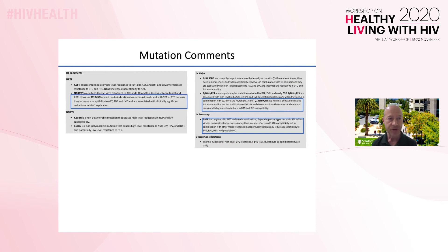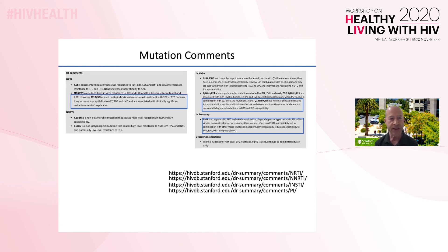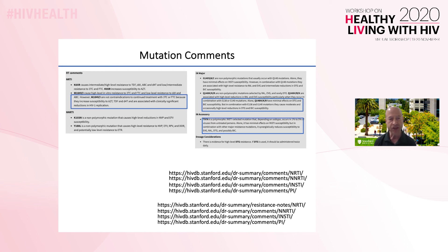The third part of the report for each drug class is the list of comments for each mutation. This slide shows the RTI comments and the INSTI comments for the sample we've been using. The comments contain data that may not be reflected in the mutation penalty scores. For example, the M184I/V comment states that although these mutations cause high-level 3TC and FTC resistance, they are not contraindications to continued use of these drugs because they increase susceptibility to AZT and tenofovir and reduce HIV-1 replication. The comments also indicate which mutations are polymorphic, in that they can be observed in previously untreated persons. There are four pages containing the complete list of DRM scores for each drug class, and four pages containing reviews of the DRMs for each class with cited references.